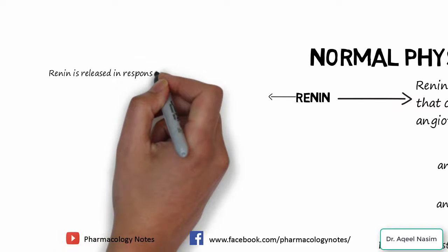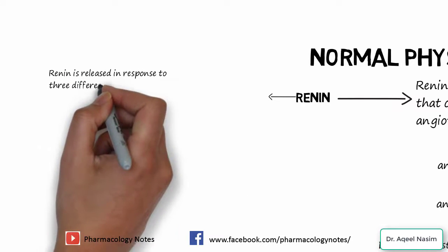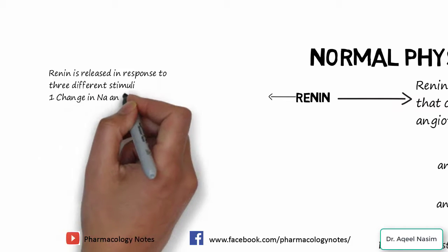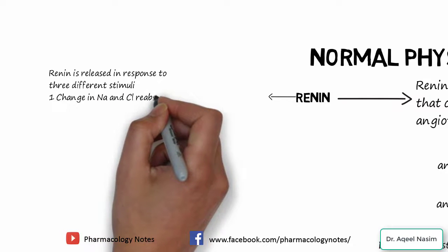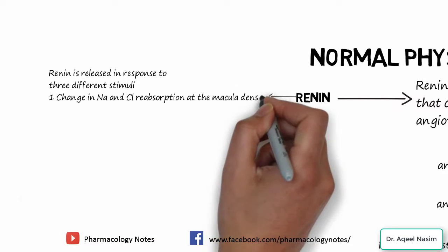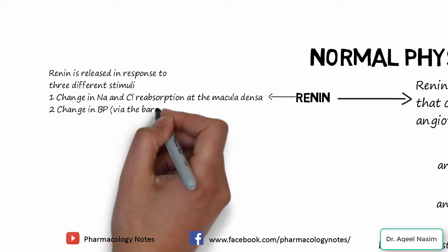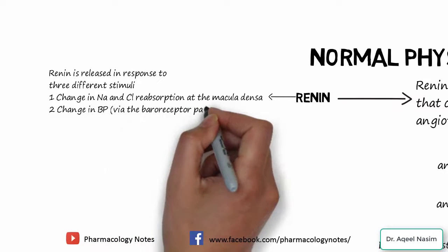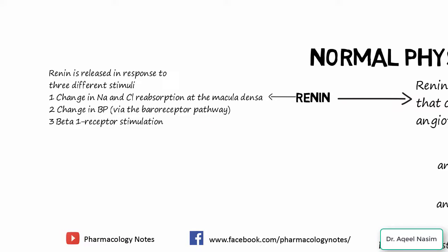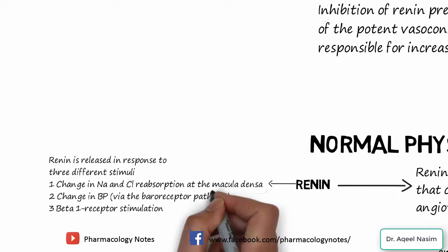Renin is released in response to three different stimuli. Number one is a change in sodium and chloride absorption at the macula densa. Number two is a change in blood pressure via baroreceptors. Number three is beta-1 receptor stimulation. These three are the pathways which lead to the release of renin.